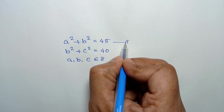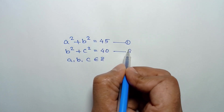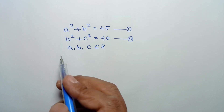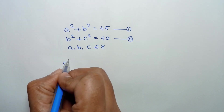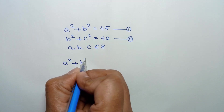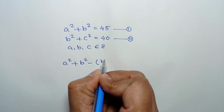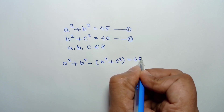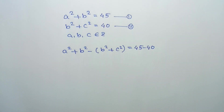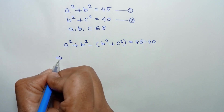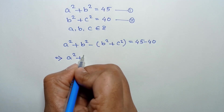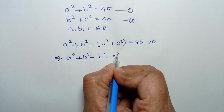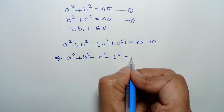Let's call it equation number one and equation number two. If we subtract equation two from equation one, we can write a squared plus b squared minus b squared plus c squared is equal to 45 minus 40. Or a squared plus b squared minus b squared minus c squared is equal to 45 minus 40, which is 5.